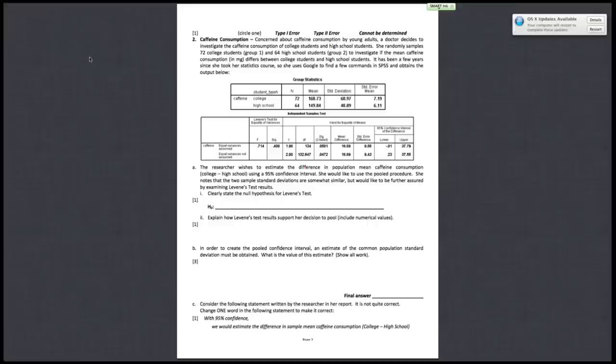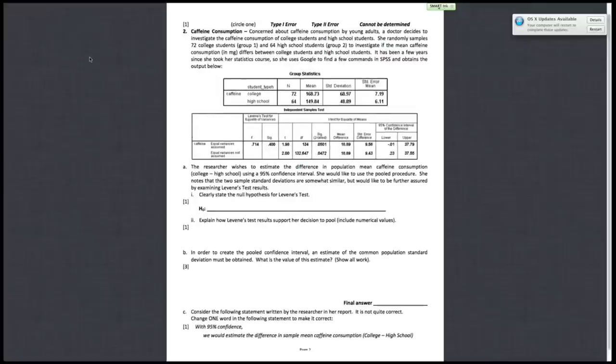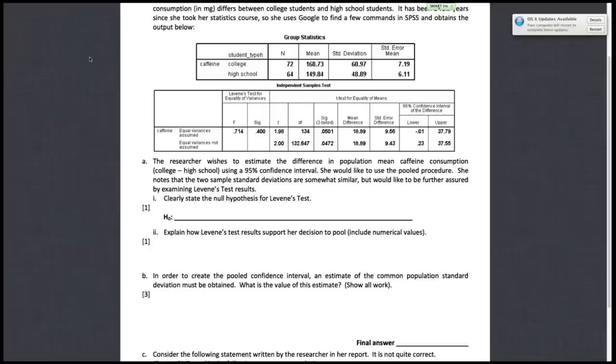Part A: the researcher wishes to estimate the difference in population mean caffeine consumption using a 95% confidence interval. She would like to use a pool procedure. She notes that two sample standard deviations are somewhat similar. We'd like to be further assured by examining Levine's test results.